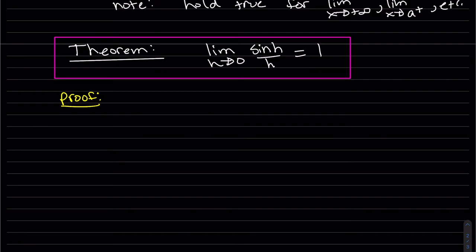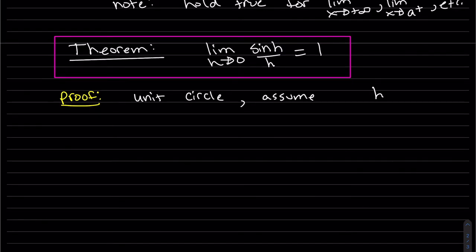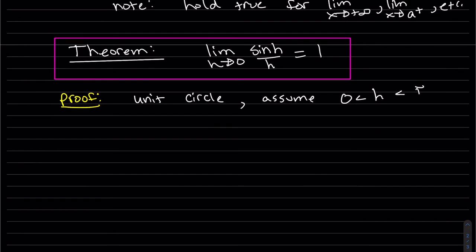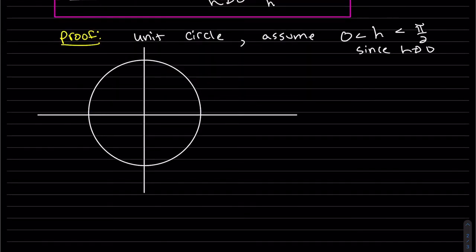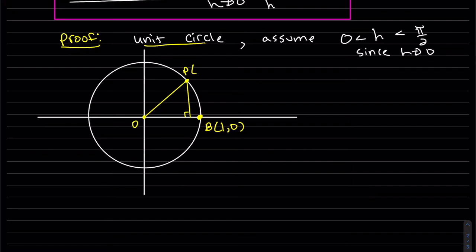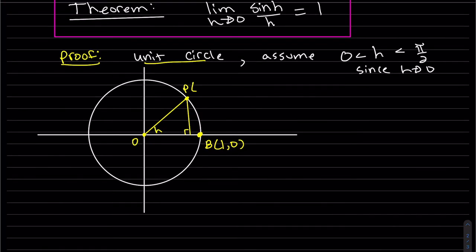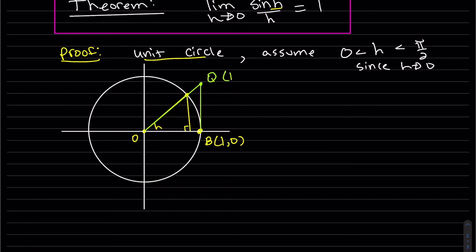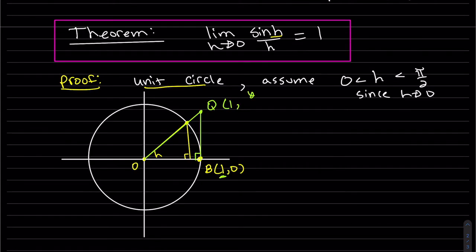So first we're going to draw a unit circle. And we're going to assume h is in between zero and π/2. And that's because h is approaching zero, so it's small, we can assume. I'm going to call this point O, B we can see is (1,0) since it is a unit circle. P, we'll call that angle h, since it's sine of h. So if I go straight up from here, that's my Q.